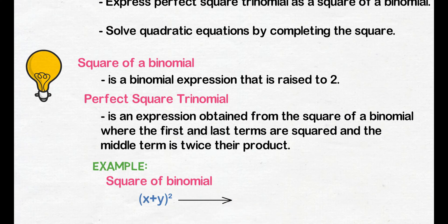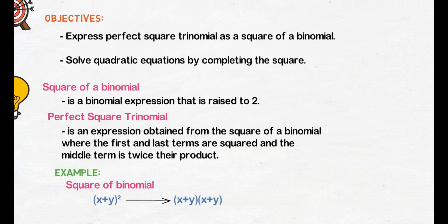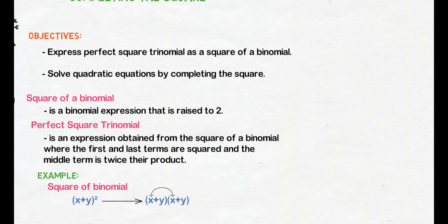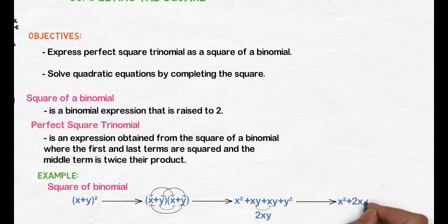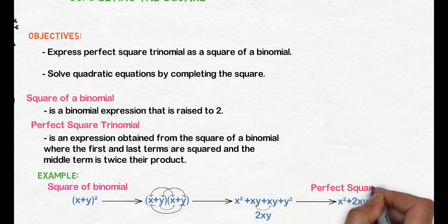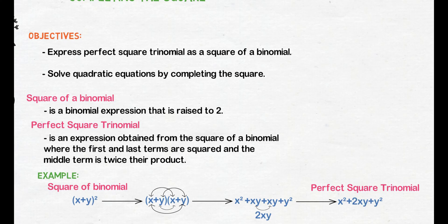Pwede natin i-rewrite ito as the product of x plus y and x plus y. Perform natin ang FOIL method. X times x is x square. X times y is xy. Y times x is xy. And y times y is y square. Combine similar terms xy and xy, we get 2xy. So we have x square plus 2xy plus y square. Ang tawag natin sa expression na ito ay perfect square trinomial.